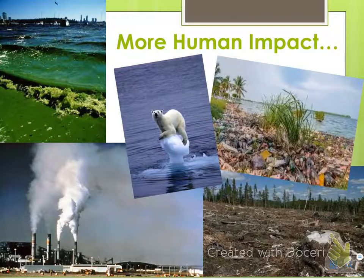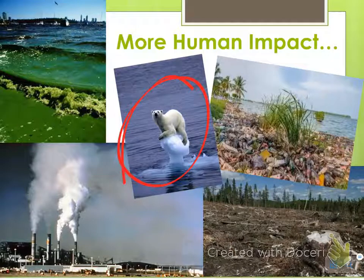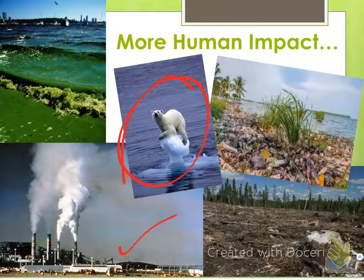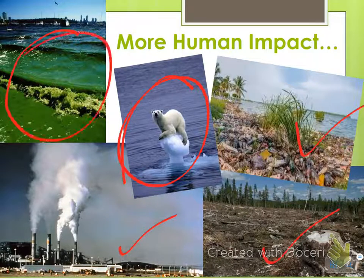Some more issues: global warming and the polar bears and ice caps melting, pollution, clear-cutting, more pollution. And this is a picture of an algae bloom — that's eutrophication, which I'll show you in a moment.